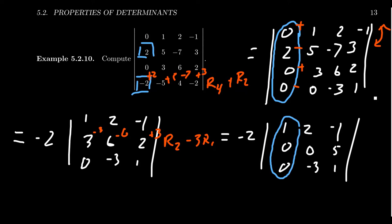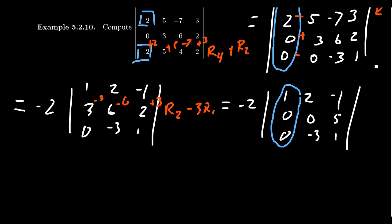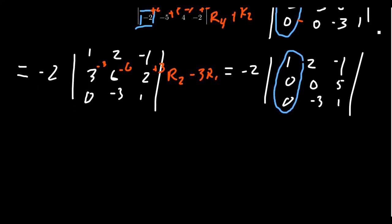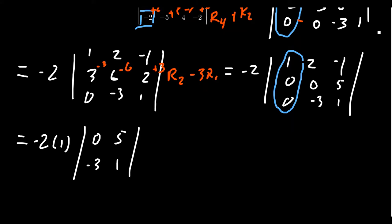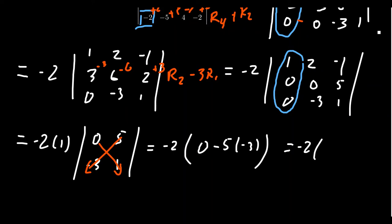Cofactor expanding across the first column, since the coefficient is a 1, we get negative 2 times 1 times the 2×2 determinant [0, 5 / −3, 1]. As it's a 2×2, we take the difference of diagonal products: (0)(1) − (5)(−3) = 0 + 15 = 15. So negative 2 times 1 times 15 gives us a determinant of −30.